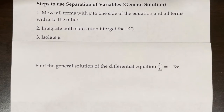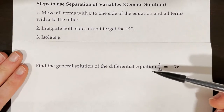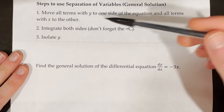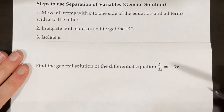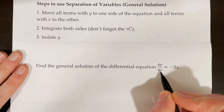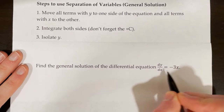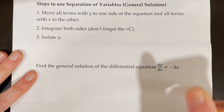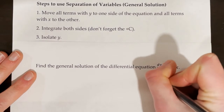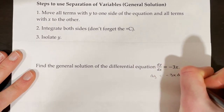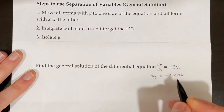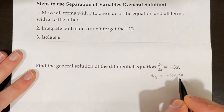Find the general solution of dy/dx = −3x. Our first step using separation of variables is to move all terms with y to one side and all terms with x to the other. I'm going to multiply both sides by dx so that all x's are on the right side. So I get dy = −3x dx, with all y's on the left and all x's on the right.